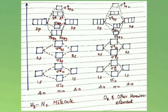This is the molecular energy level diagram. The first one is the molecular orbital energy level diagram for diatomic homonuclear molecules of hydrogen to nitrogen. The second one is the molecular orbital energy level diagram for homonuclear diatomic molecules of oxygen and other heavier elements.